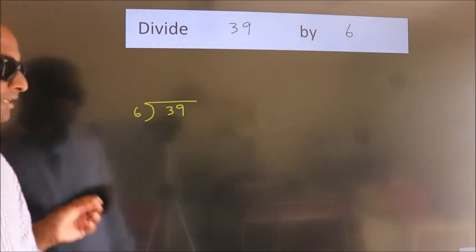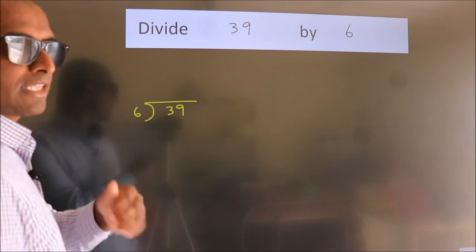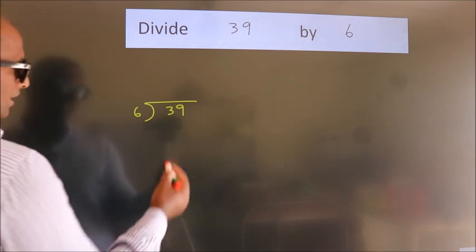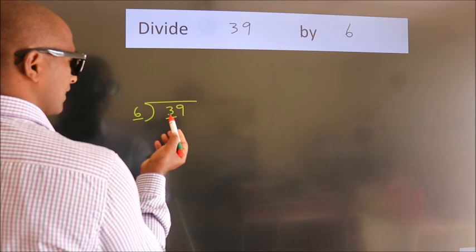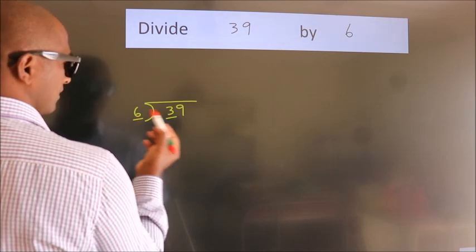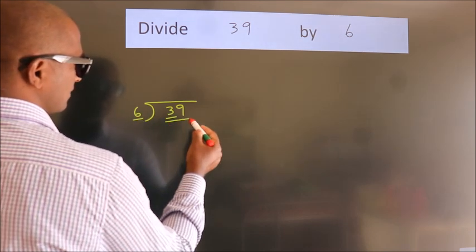This is your step 1. Next, here we have 3. Here 6. 3 is smaller than 6, so we should take 2 numbers: 39.